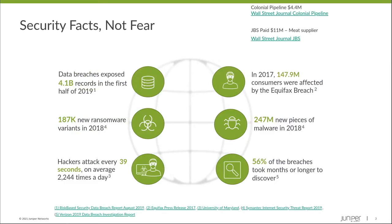One of the things about security inside the network and the data center is the things that have been happening recently — we hear about the Colonial Pipeline with all the ransomware, stopping the gas pipes. Additionally, you hear about the JBS meat supplier affecting the supply chain and the production of produce. So these are things you hear about now, but they've actually been happening for quite some time.